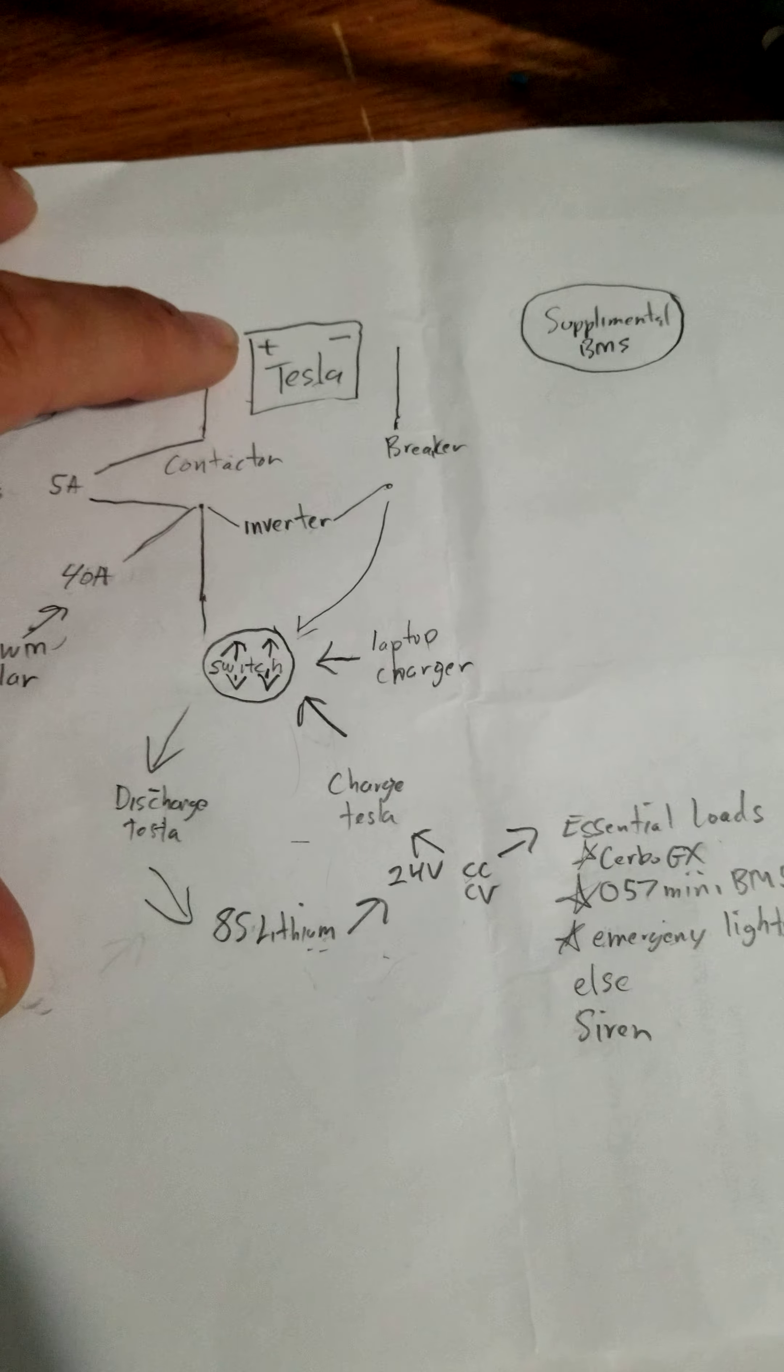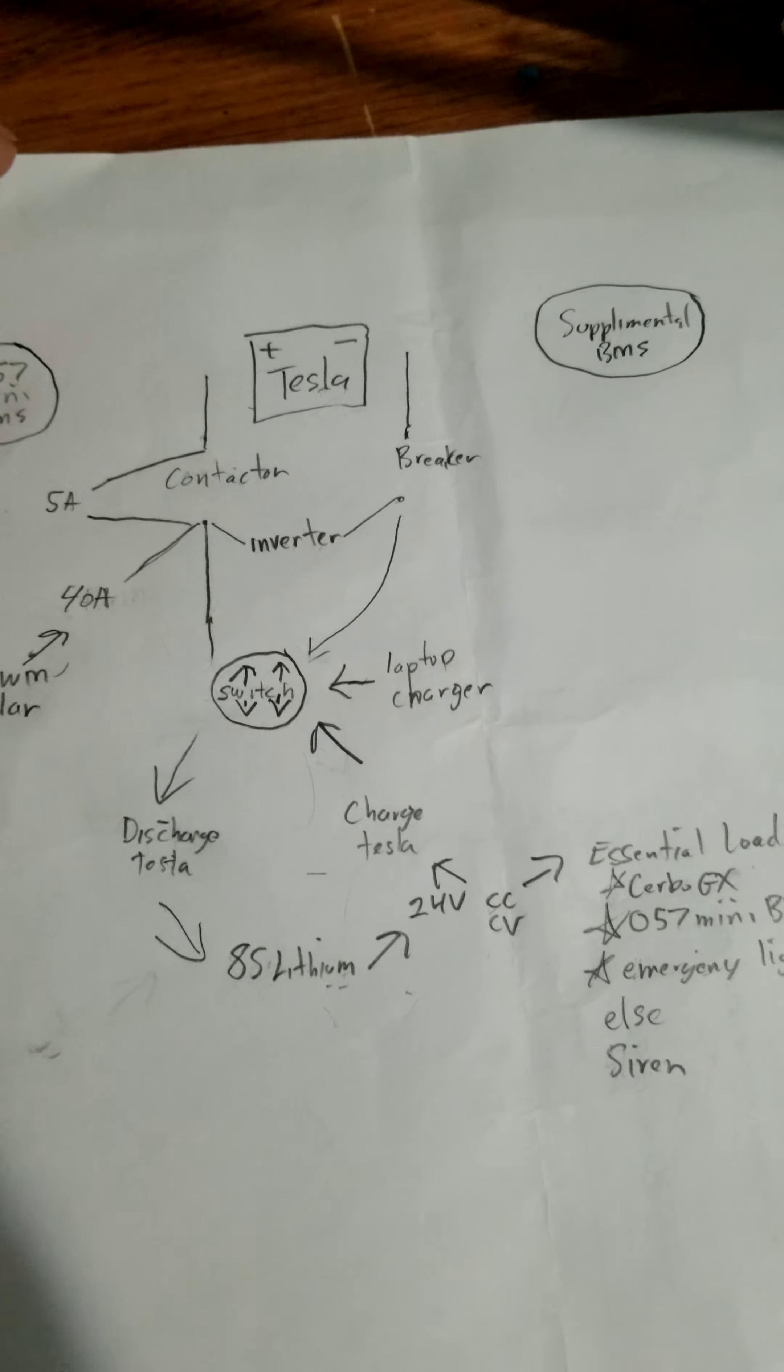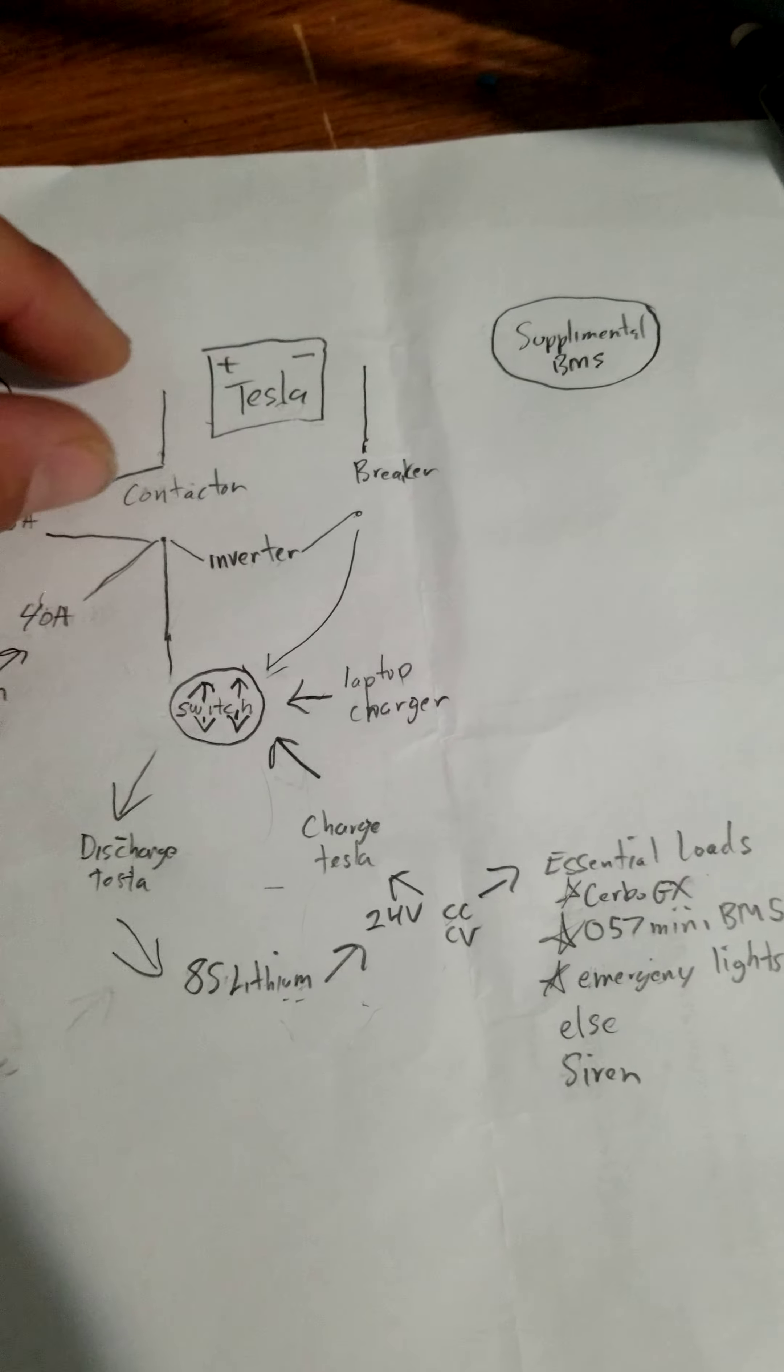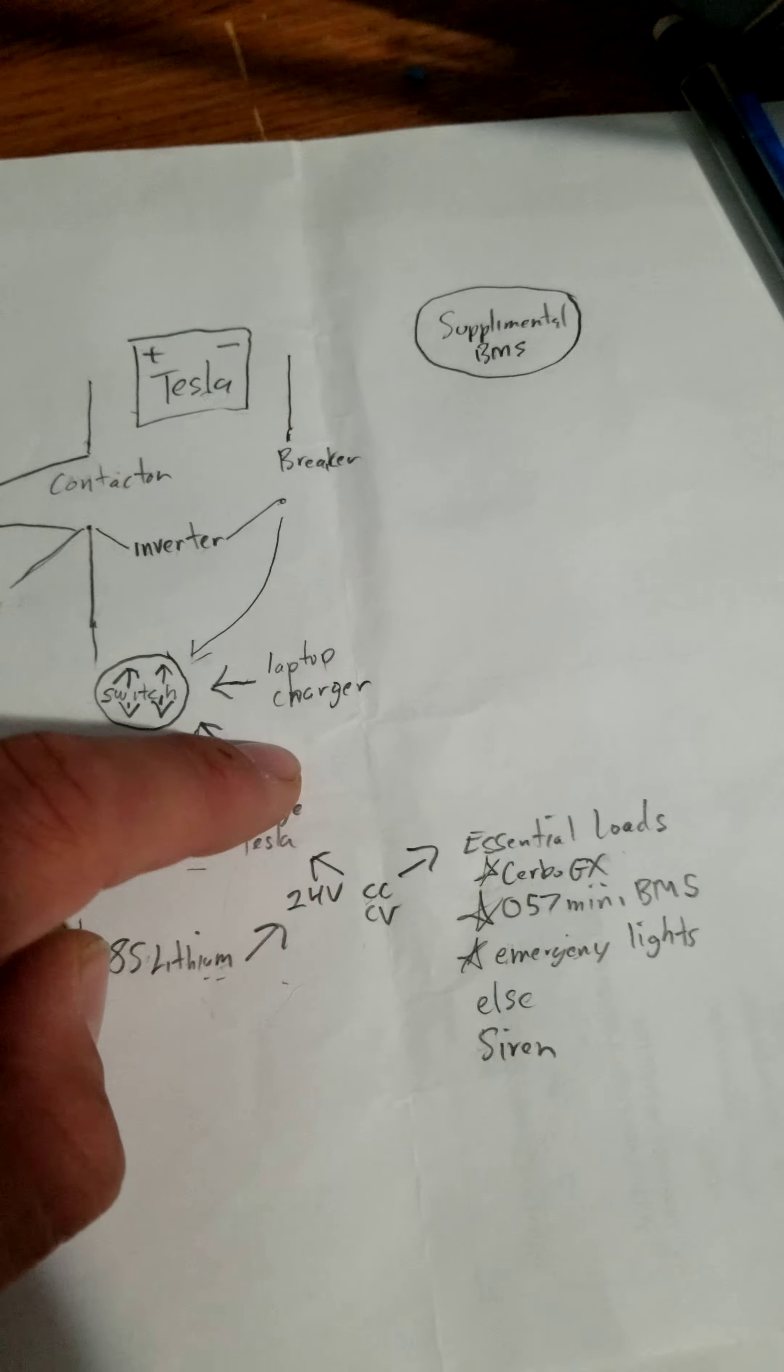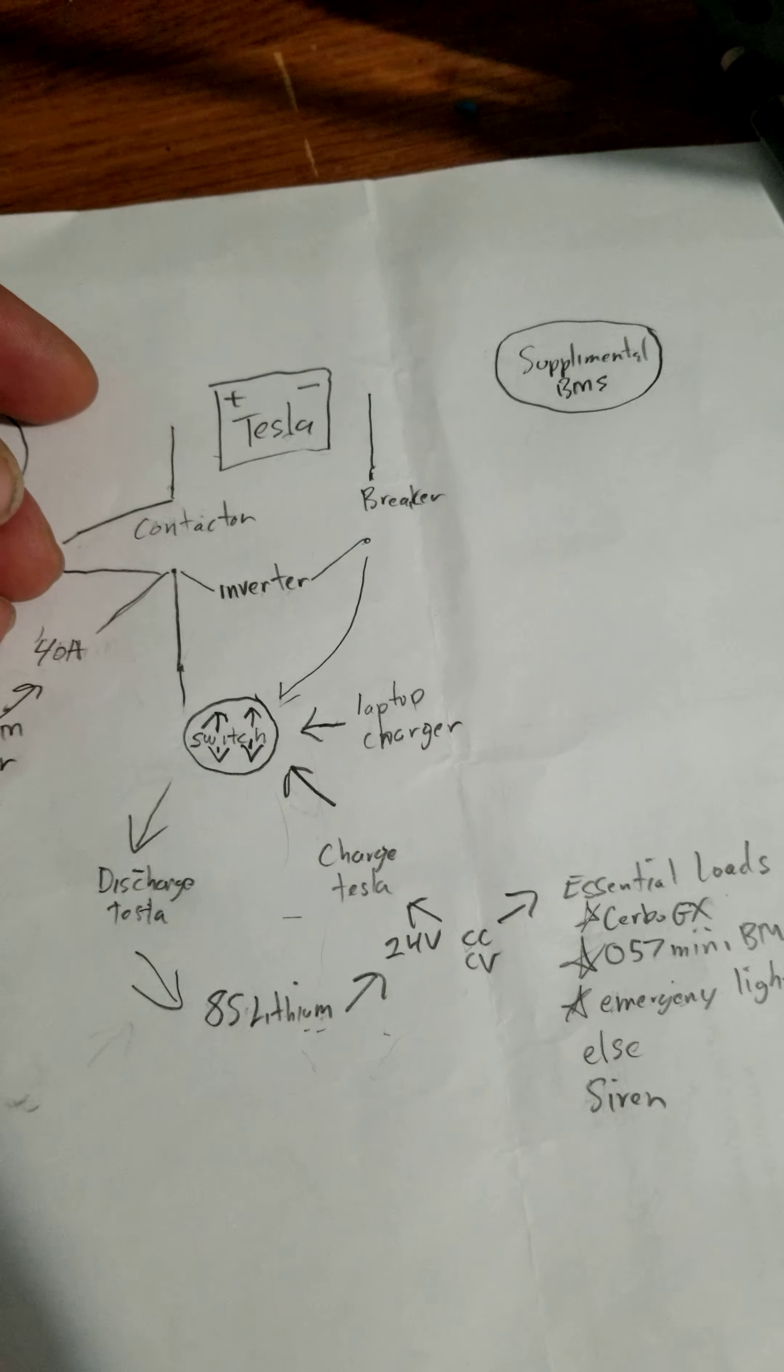This Tesla battery is going to go ahead and shut itself off eventually because even though when one cell drops down it'll shut the contactor off and then it'll auto balance the cells and the contactor will turn back on again and it'll power this essential loads for a little bit and then it'll turn itself back off again.